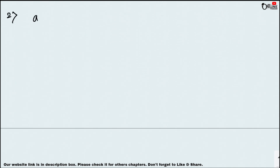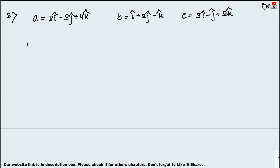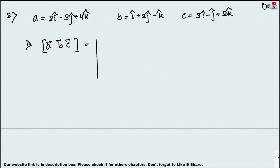In sum number two: vector a = 2i − 3j + 4k, vector b = i + 2j − k, and vector c = 3i − j + 2k. Find first the scalar triple product [a, b, c]. Write the determinant with coefficients: a gives 2, −3, 4; b gives 1, 2, −1; c gives 3, −1, 2.